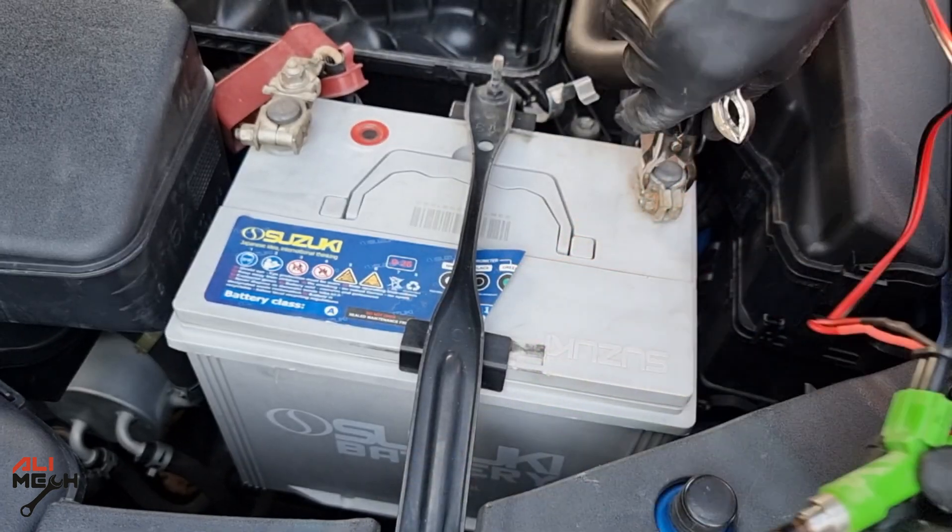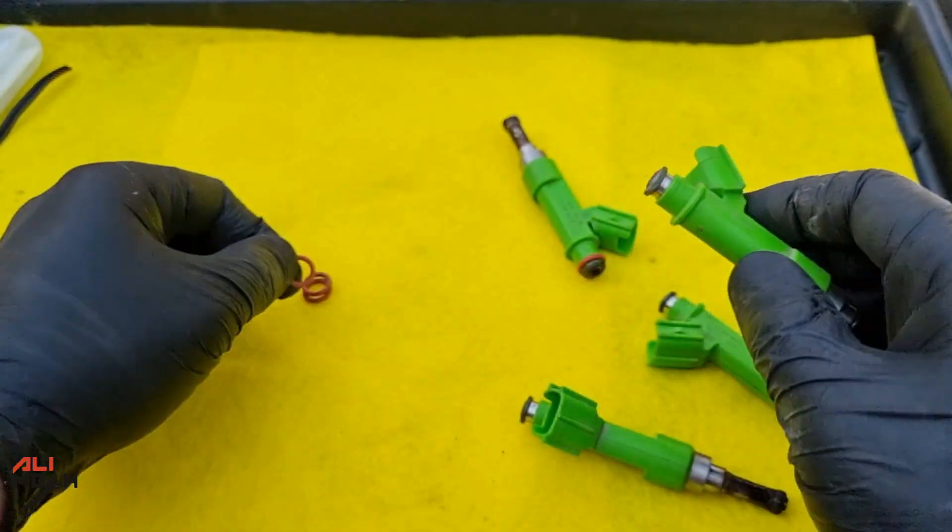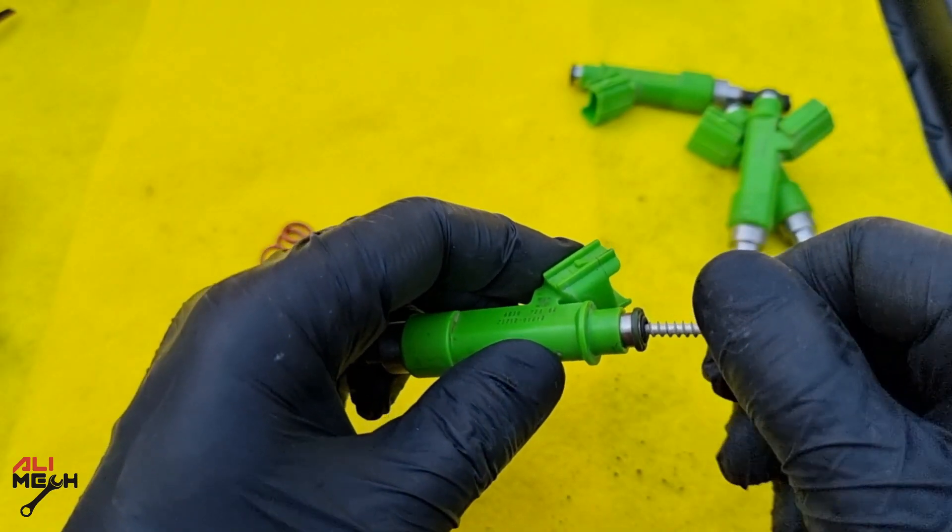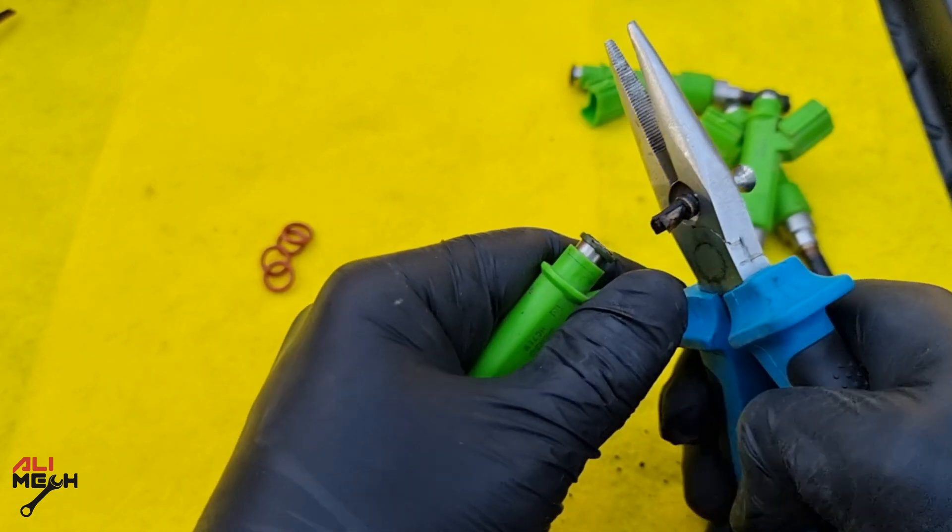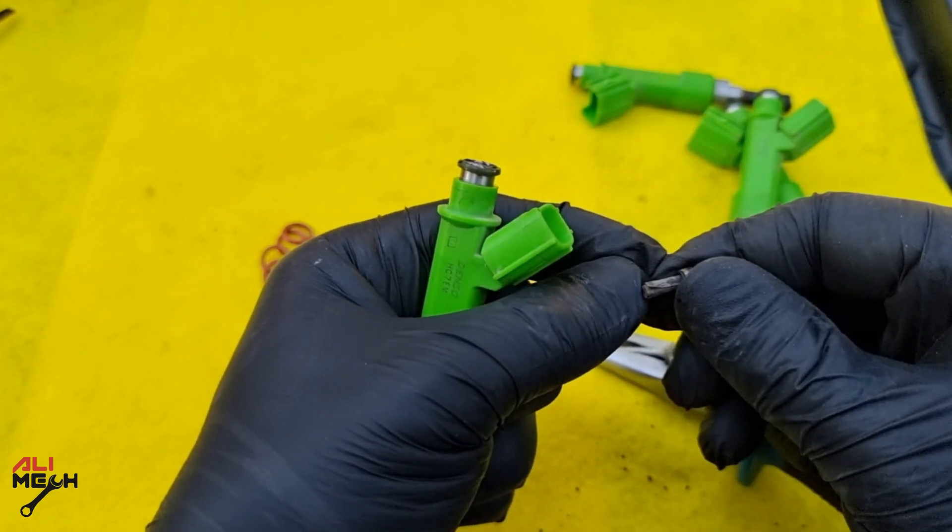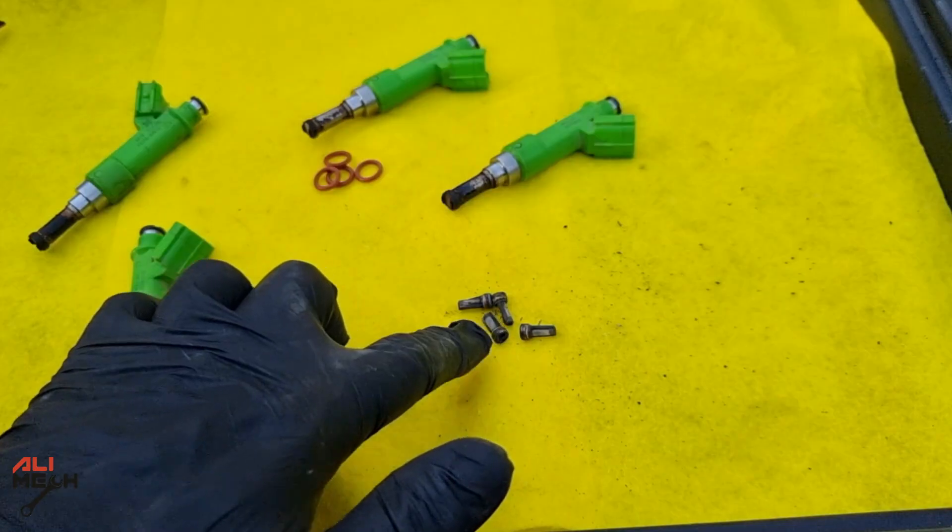Before using the fuel injector adapter, we need to remove all the O-rings if you are willing to use them again, but I recommend using new ones after cleaning. Then take all the filters out before cleaning. This one is not only dirty and clogged, it ripped off from a side and let all the dirt get inside the injector. But the other filters are just dirty.